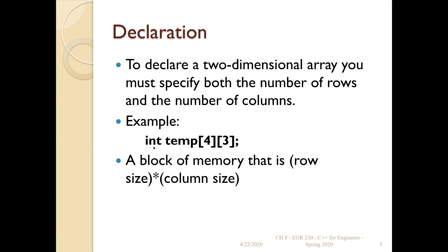For this particular type of array, here is a declaration. We'll create an array of integer variables and you're going to access them through the name called temp. For this particular array, it has four rows and three columns. You can think of this as a grid. This declaration creates an array that has 12 elements in it, and how you access it is different from working with one-dimensional arrays.